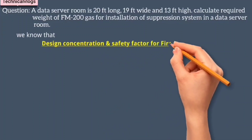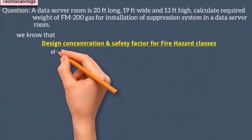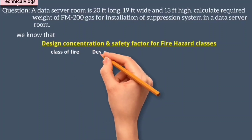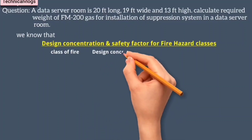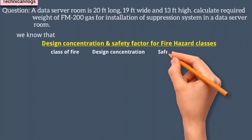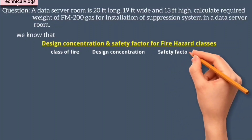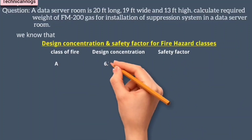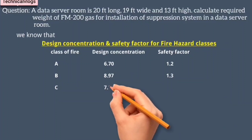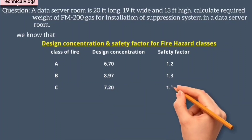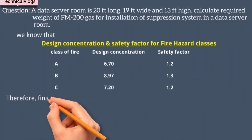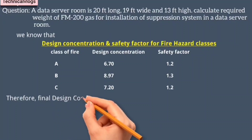We know that design concentration and safety factor for fire hazard classes. For Class A, design concentration is 6.70 and safety factor is 1.2. For Class B, design concentration is 8.97 and safety factor is 1.3. For Class C, design concentration is 7.20 and safety factor is 1.3.